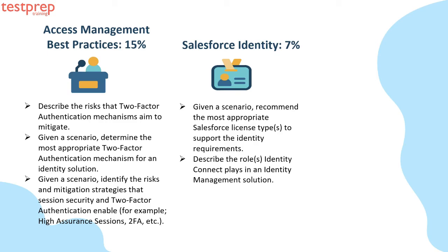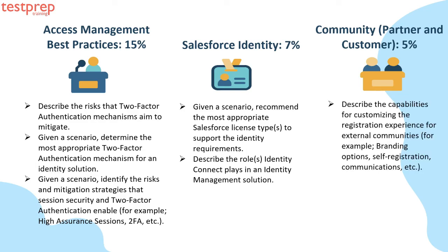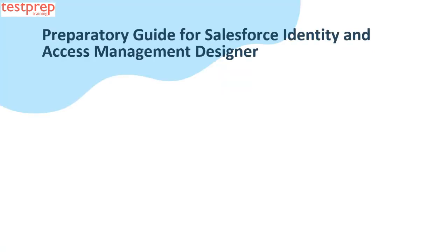Number five: Salesforce Identity, 17%. It contains: first, given a scenario, recommend the most appropriate Salesforce license types to support the identity requirements. Second, describe the roles Identity Connect plays in an identity management solution. Number six: Community Partner and Customer, 5%. It contains: describe the capabilities for customizing the registration experience for external communities — for example, branding options, self-registration, communications, etc.